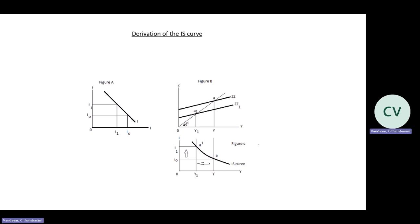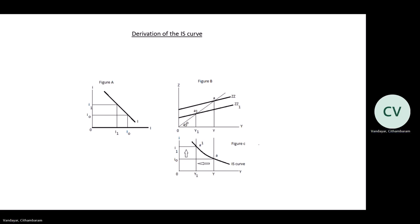Just one other point: if you look at figure B and compare the size of the change in ZZ to ZZ1 and the size of the change in the level of income and output from Y to Y1, you'll find that the magnitude of the change as a result of a change in autonomous spending on the level of income and output is greater. That occurs because of the multiplier. So the decline in income and output is a multiple of the decrease in investment spending times the multiplier — the change in Y equals the multiplier times the change in investment. The magnitude of the change is larger because of the multiplier.